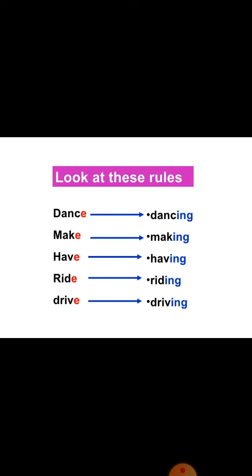Look at these rules as well. For verbs ending in e, we omit the e and apply ing. Dance becomes dancing. Make becomes making. Have becomes having. Ride becomes riding. Drive becomes driving.